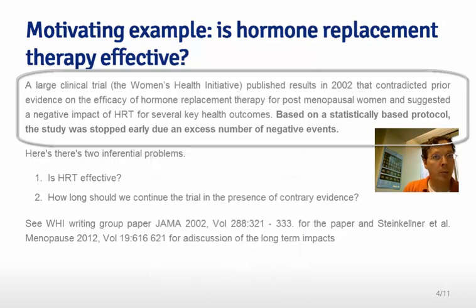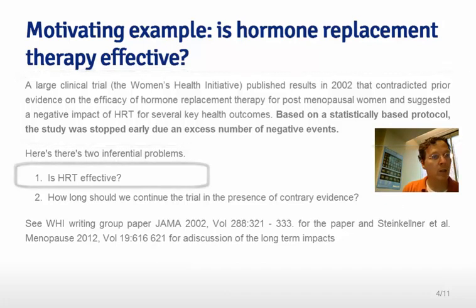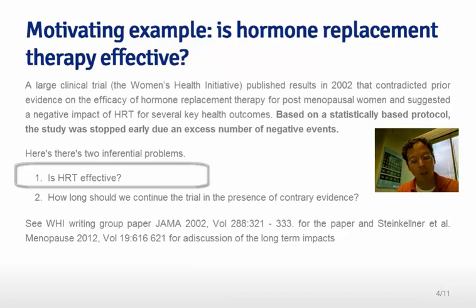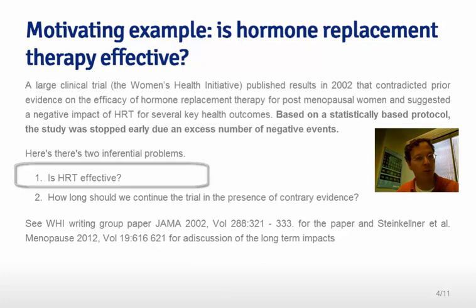However, based on a statistically based protocol, the study had to be stopped because HRT was shown not only to be non-effective, but also to have a negative impact on several key health outcomes. There are several interesting things to discuss for this class: one was the important question that the study was designed to investigate — is HRT effective? — and to discuss why they did randomization, how one would answer a question like that, how one would formulate the problem, and how one would perform the statistical inference.